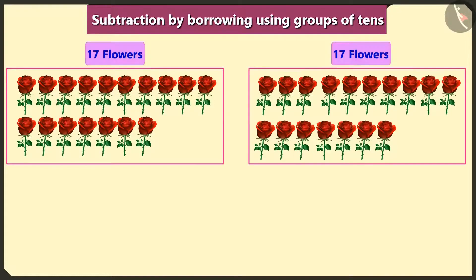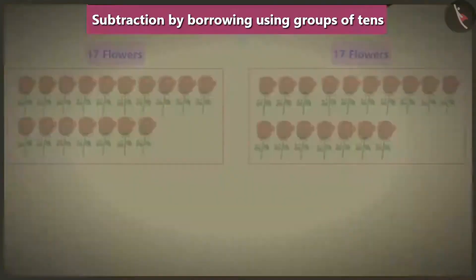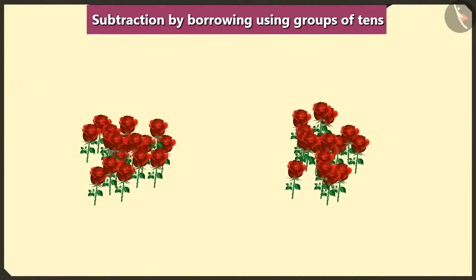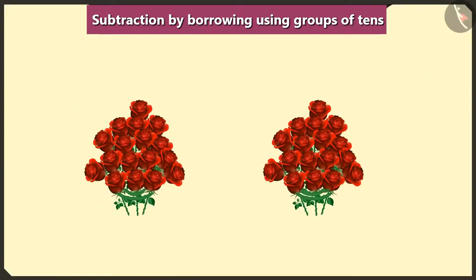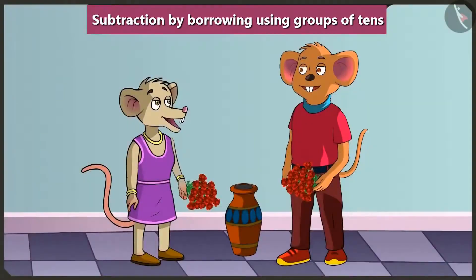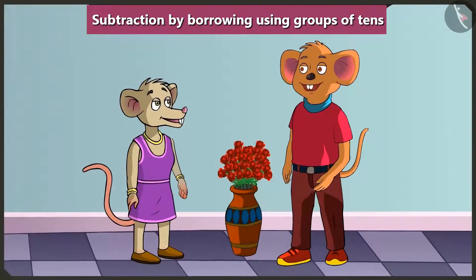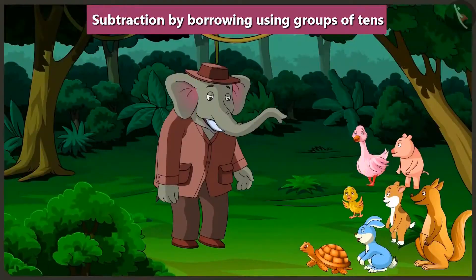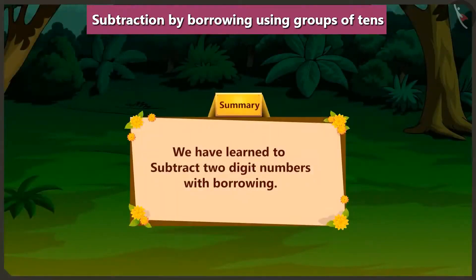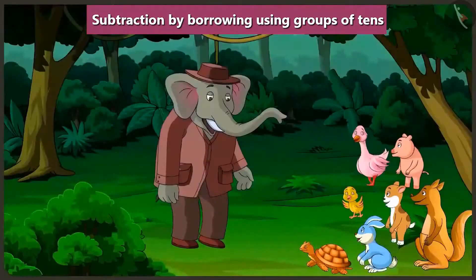We would have the same number of flowers — let's both make a bouquet! Children, I hope you have learned how to subtract two-digit numbers with borrowing. In the next video we will understand what mistake Chi Chi makes while performing subtraction with borrowing.